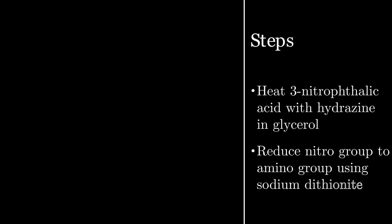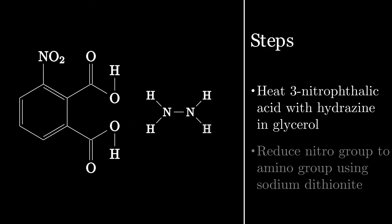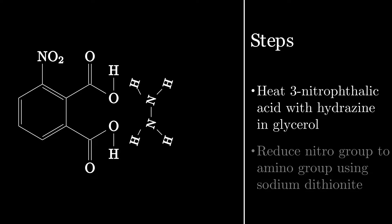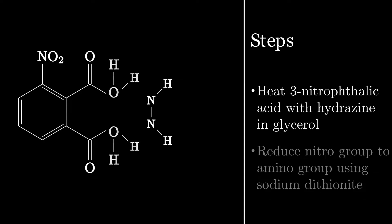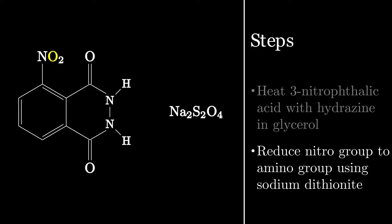Luminol can be synthesized in a two-step process. Starting with a solution of 3-nitrophthalic acid in a high boiling solvent like glycerol, we'll first add hydrazine while heating. This gets rid of the hydroxyl groups by evaporating them as water, and turns the nitrophthalic acid into nitrophthalic hydrazide. Finally, we'll reduce the nitro group to an amino group by introducing a reducing agent such as sodium dithionite.